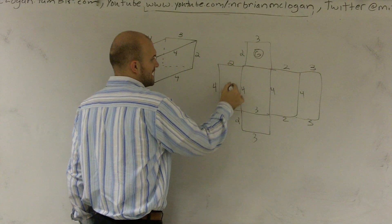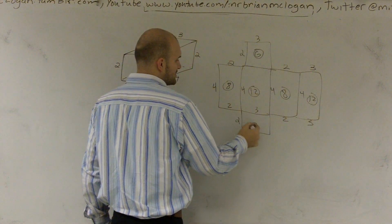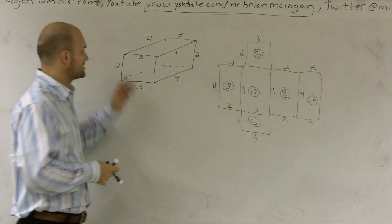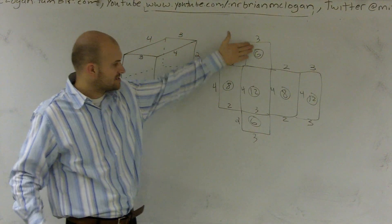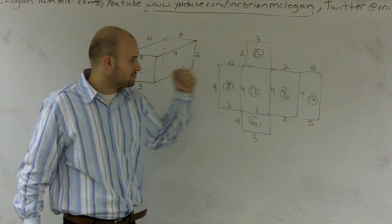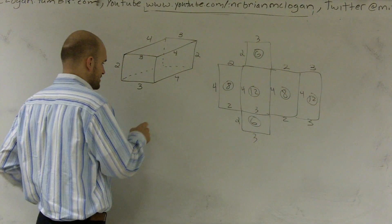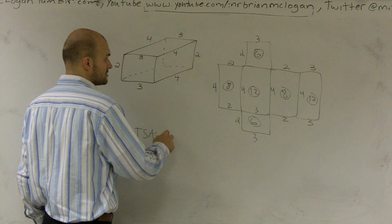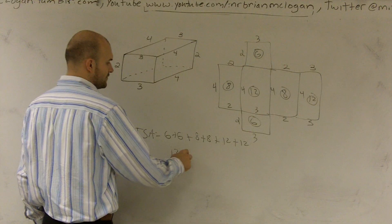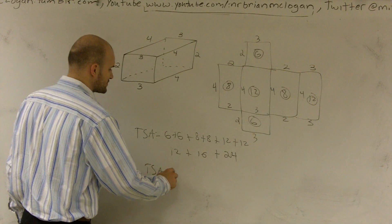To find the total surface area, I find the area of each face. 2 times 3 is 6; 4 times 2 is 8; 4 times 3 is 12; 4 times 2 is 8; 4 times 3 is 12; and 2 times 3 is 6. A rectangular prism has opposite sides equal: front and back are both 6, left and right sides are both 8, and top and bottom are both 12. Adding them up: 6 plus 6 is 12, plus 8 plus 8 is 16, plus 12 plus 12 is 24. The total surface area is 52.